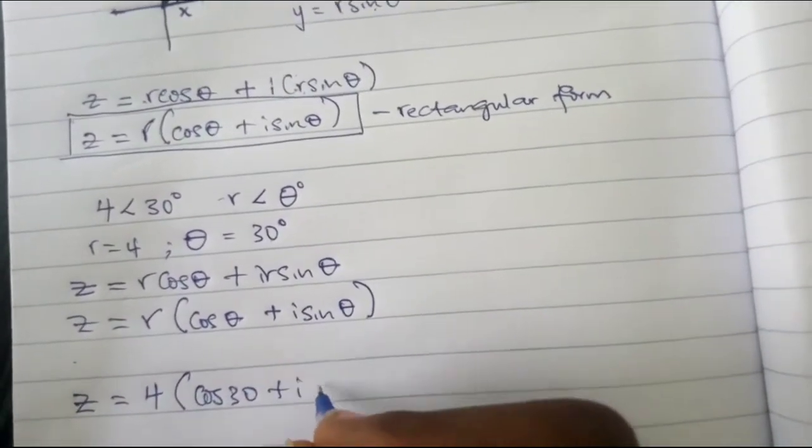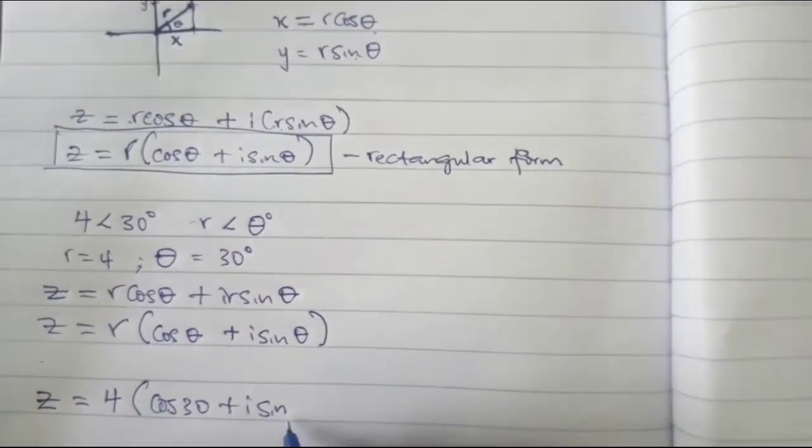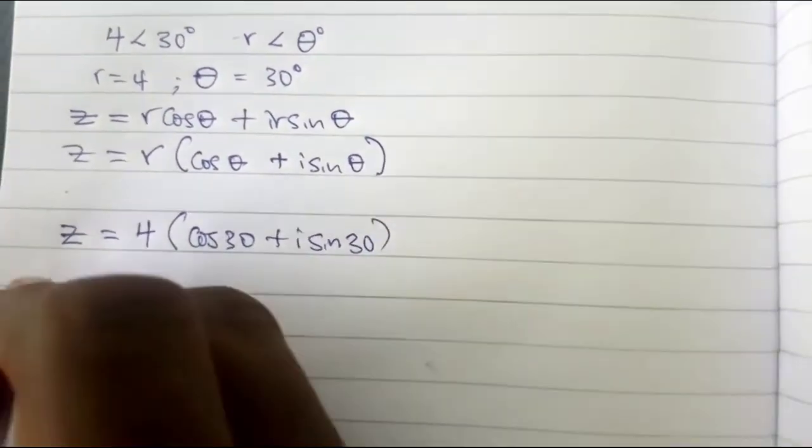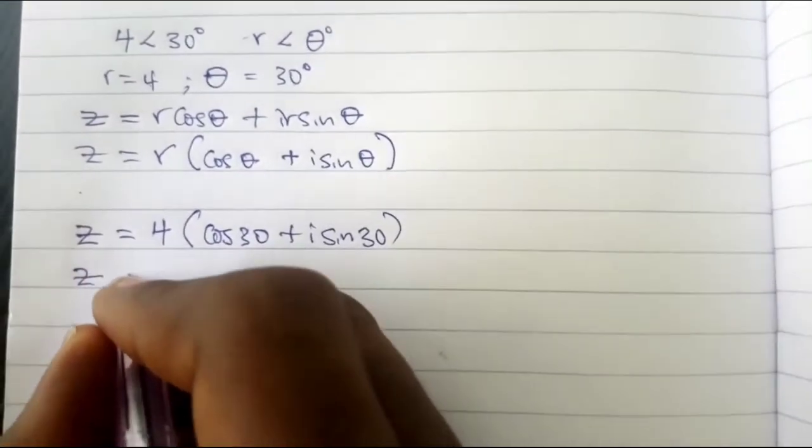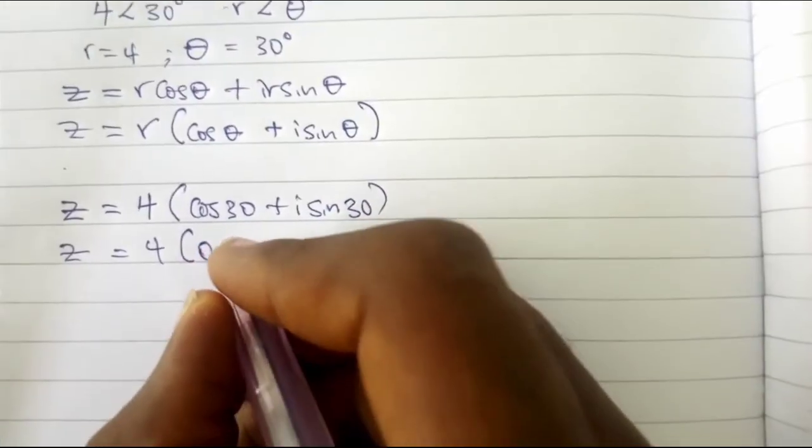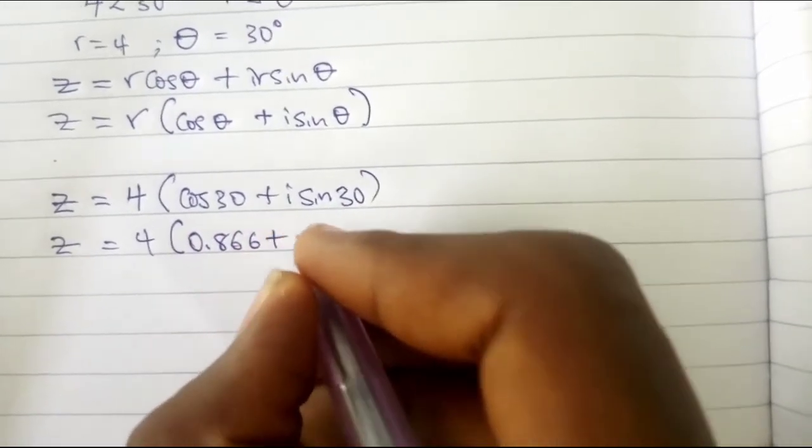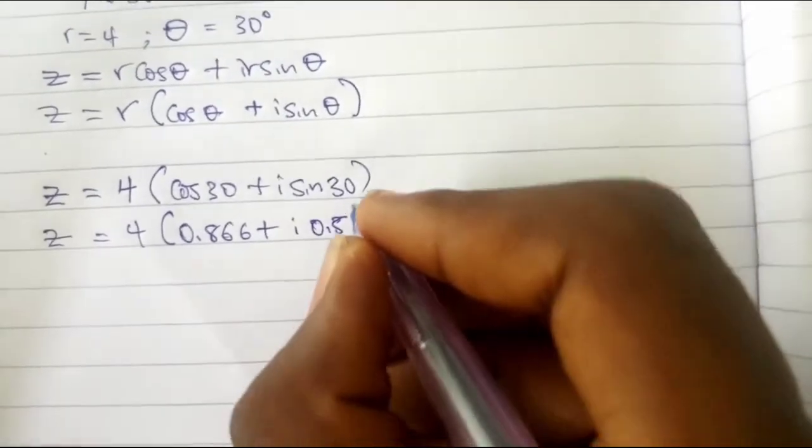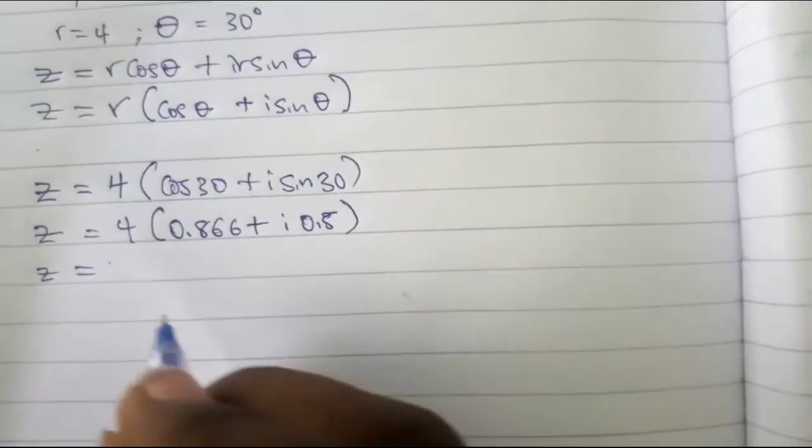So our z will be equal to 4 in bracket cos 30 which is 0.866 plus i sine 30 which is 0.5. Our z becomes 4 times 0.866 which is 3.464 plus 4 times 0.5 i which becomes 2i.